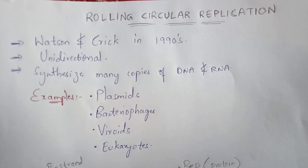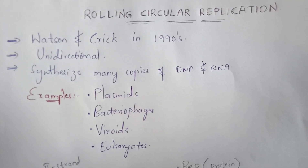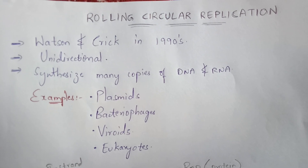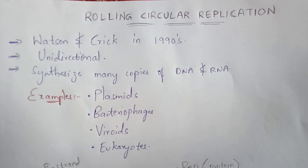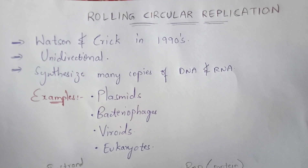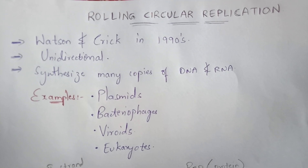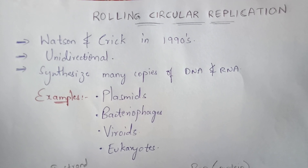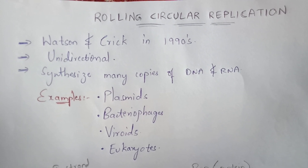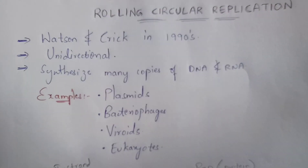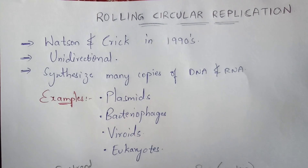Hello friends, my name is Vanindra. In this video, let us discuss about Rolling Circular Replication, which is shortly abbreviated as RCR. This rolling circular replication was mainly discovered by Watson and Crick in the 1990s.